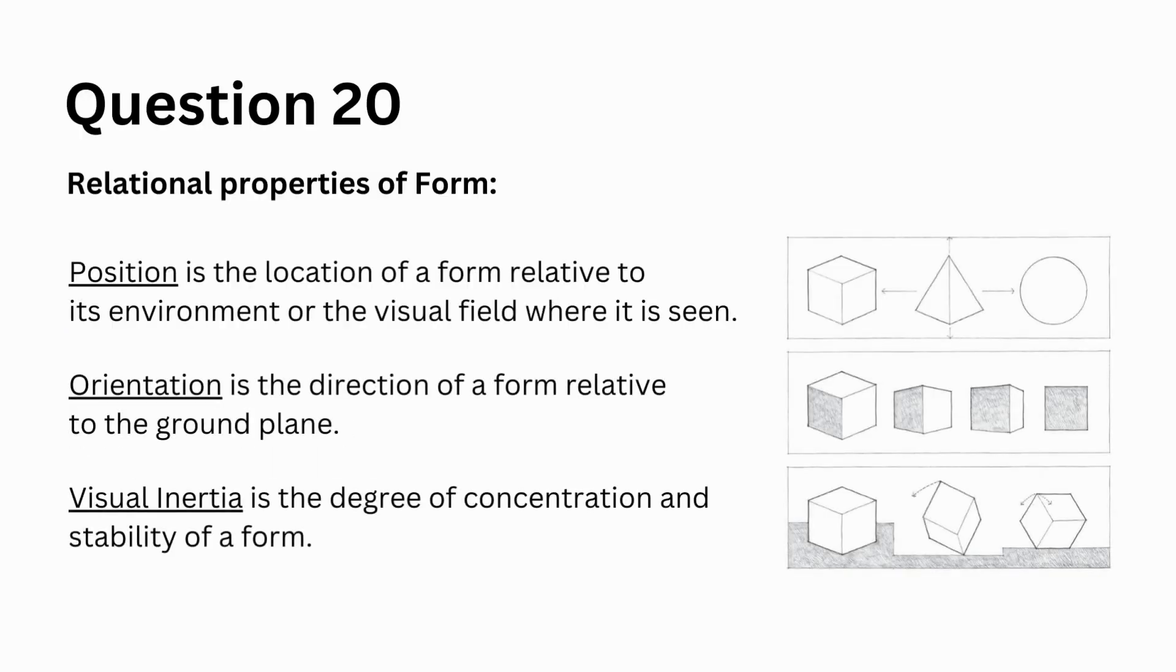Visual inertia is just one of the relational properties of form. The others are position, the location of a form relative to its environment, and orientation, which is the direction of a form relative to the ground plane.